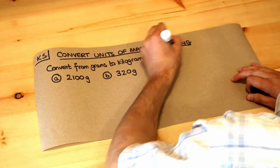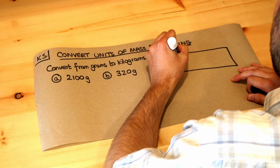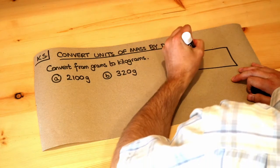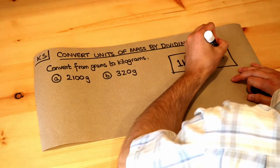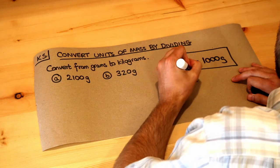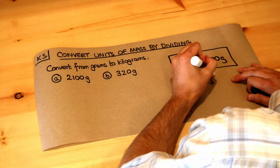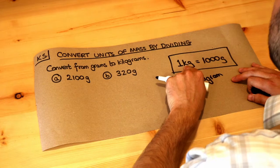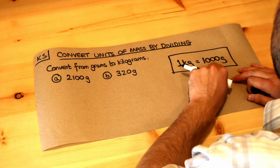Now you only need to know one conversion for this video, and that is one kilogram equals a thousand grams. Kg is short for kilogram, and the word kilo means a thousand, so one kilogram is one thousand grams.